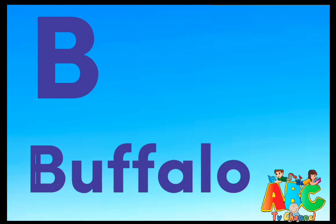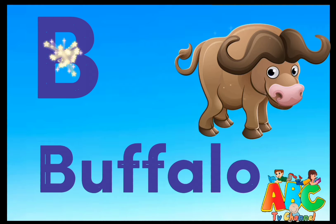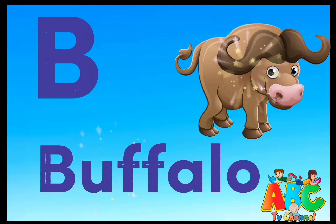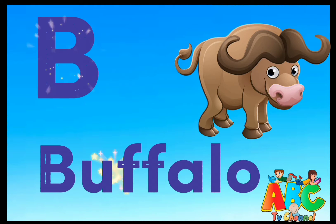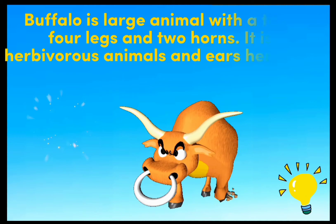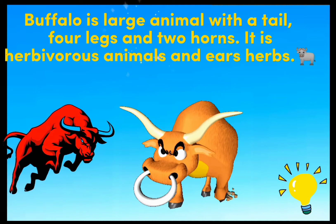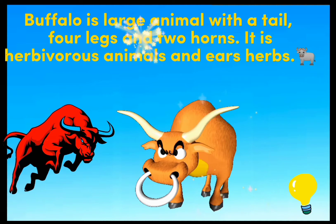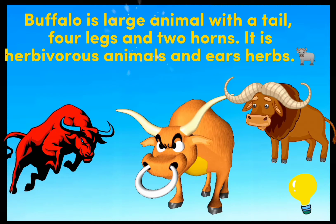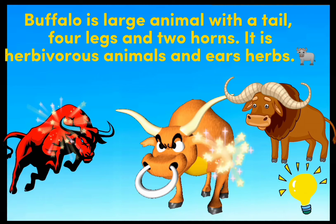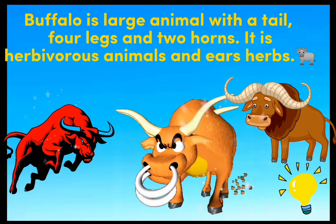B. Buffalo. Buffalo is a large animal with a tail, four legs, and two horns. It is a herbivorous animal and eats herbs.